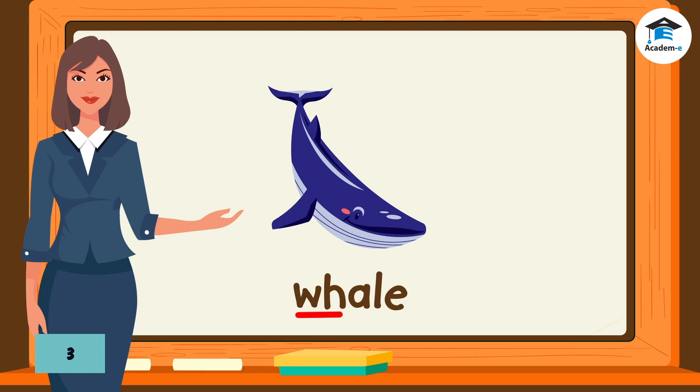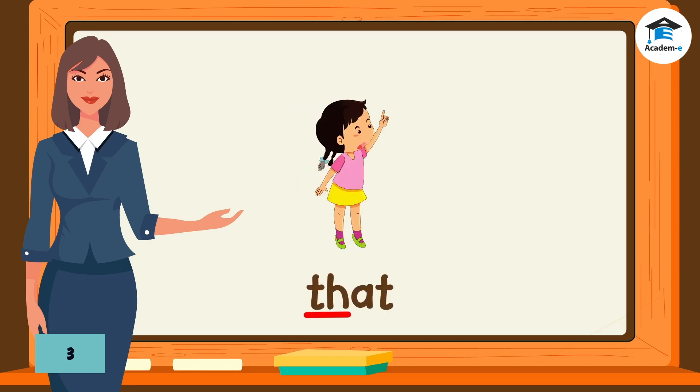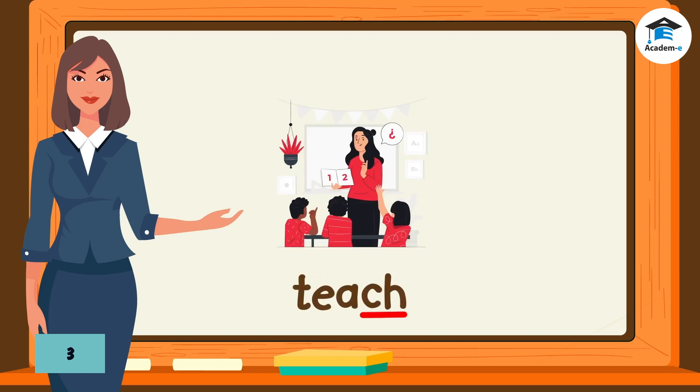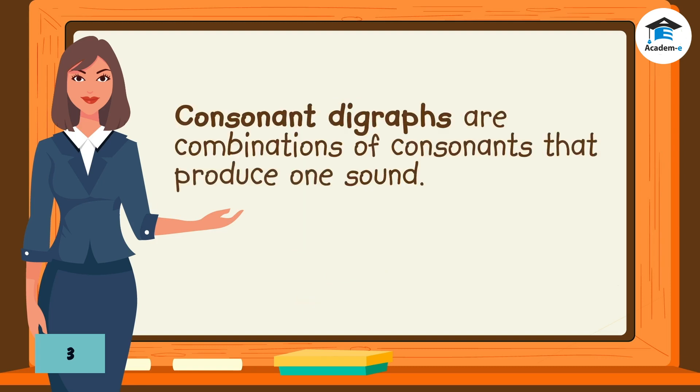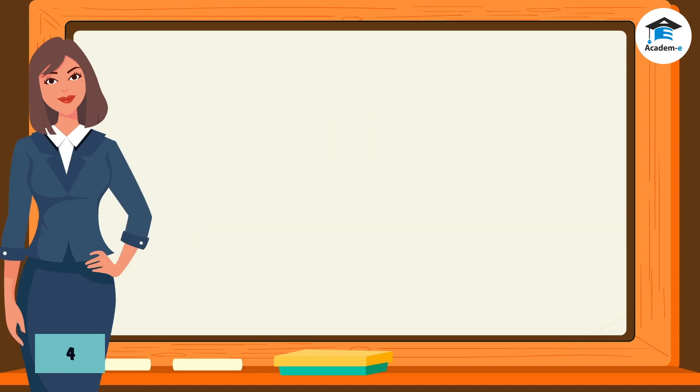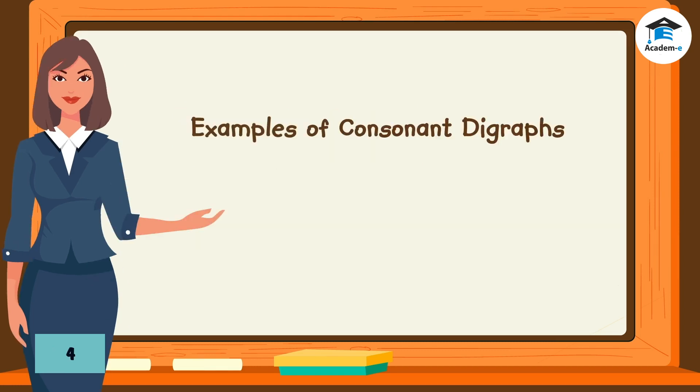The underlined letter combinations are called consonant digraphs. Consonant digraphs are combinations of consonants that produce one sound. Here are some examples of consonant digraphs.